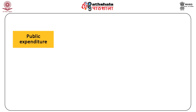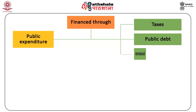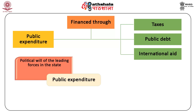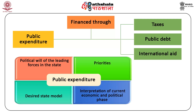Public expenditure is mainly financed through taxes, public debt, and international aid. Public expenditure is determined by the political will of the leading forces in the state, their priorities, their desired state model, and their interpretation of the current economic and political phase.